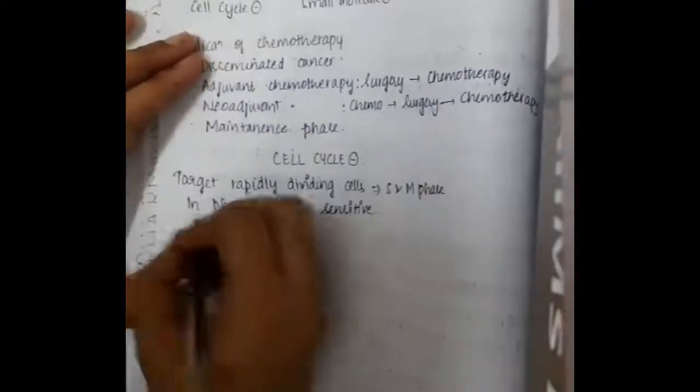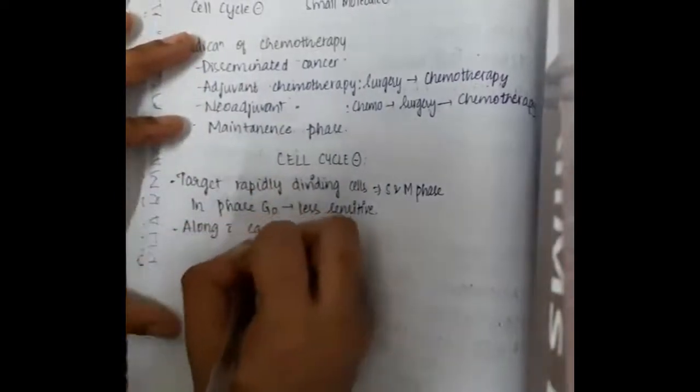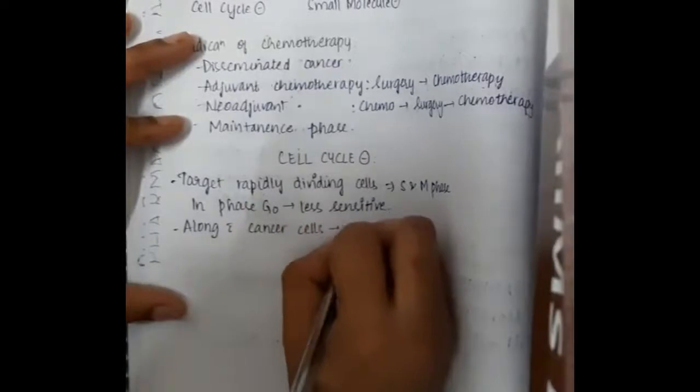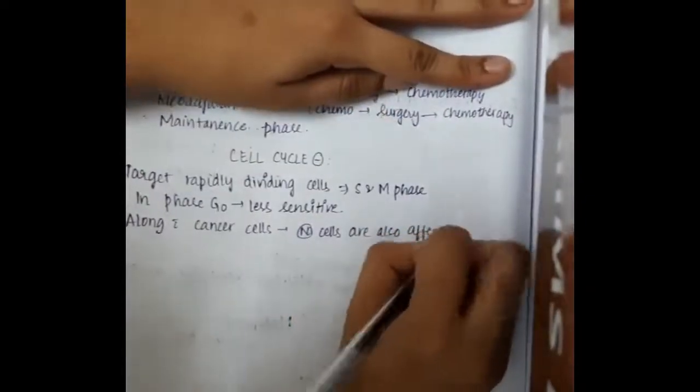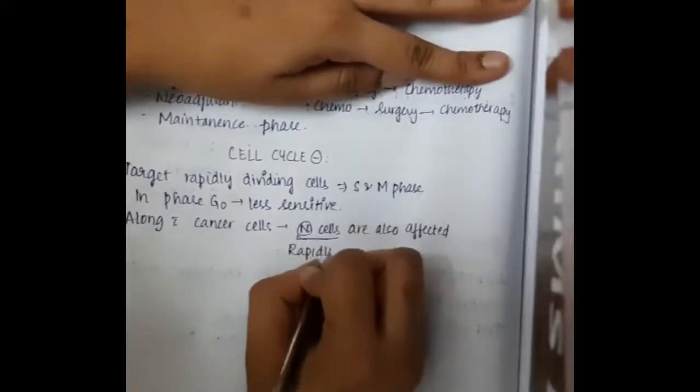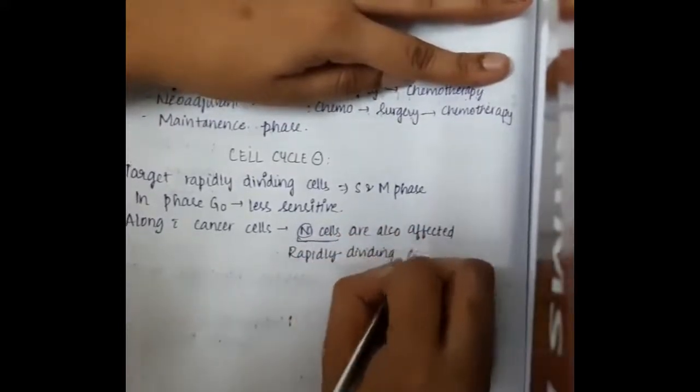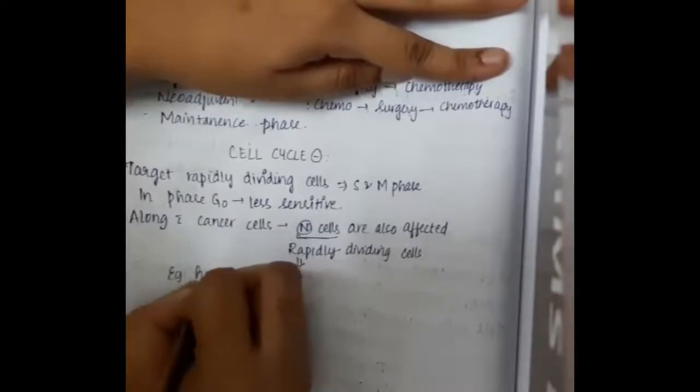These cell cycle inhibitors, along with the cancer cells, also affect normal cells, mainly the rapidly dividing cells.